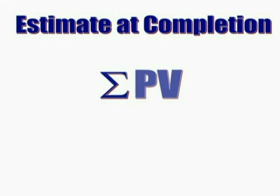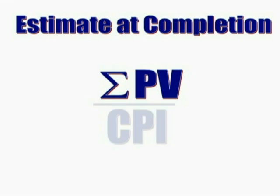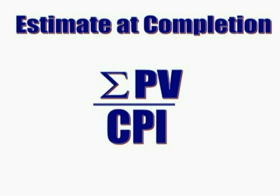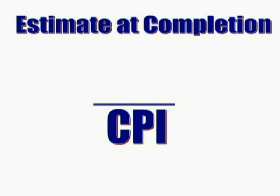You can also calculate the estimated cost of completion, or EAC, based on the current project status. EAC is the total planned value — also called the budgeted completion — divided by your current cost performance index. At any point in the project, you can calculate your CPI and divide it by your total project budget to estimate cost of completion.